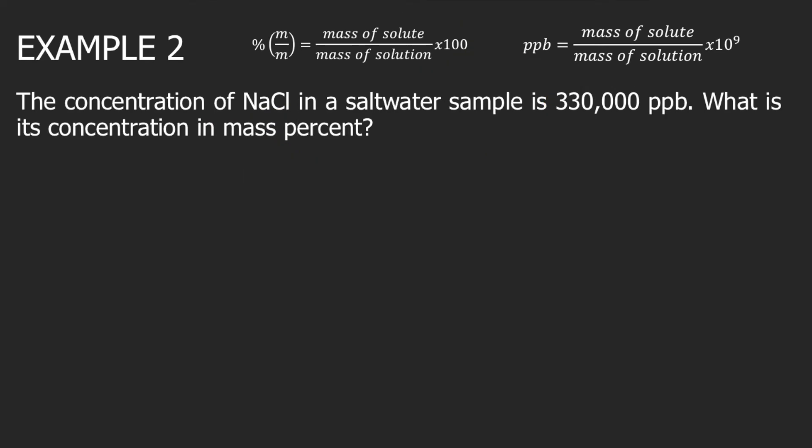Example 2. The concentration of NaCl in a saltwater sample is 330,000 PPB. What is its concentration in mass percent? This time, we are given PPB — so 330,000 PPB.